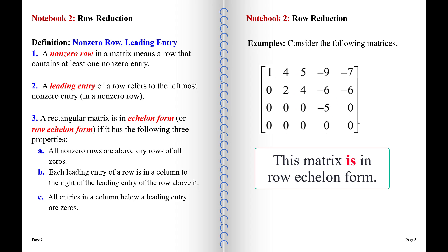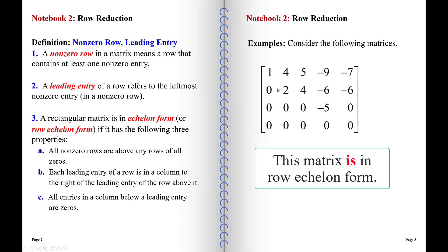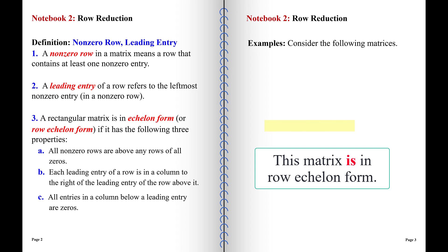After doing the row interchange on the previous matrix, the result is in echelon form. We have zeros below the leading entries, each leading entry is in a column to the right of the leading entry of the row above it, and the zero rows are all at the bottom. So this one is in echelon form.